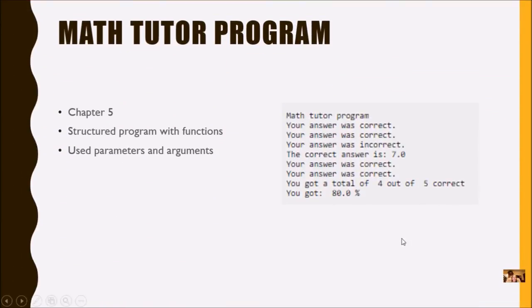Let's review the Math Tutor program. This was done back in chapter 5, and if you've saved your URLs I encourage you to go ahead and open your program from chapter 5 and take a look at your code. In chapter 5 we were doing structured programming with functions. We were just learning about using parameters and arguments, so we were making sure that we divided our program up into several functions to make each chunk of code as small as possible and to avoid duplication.